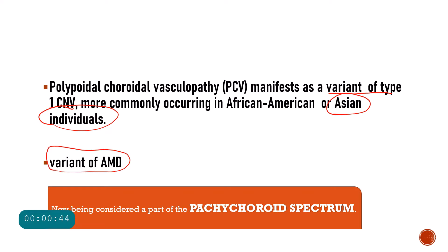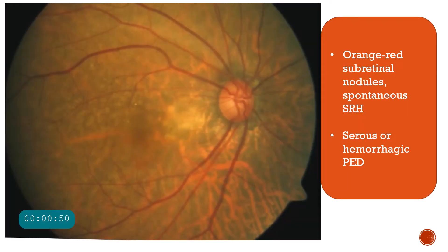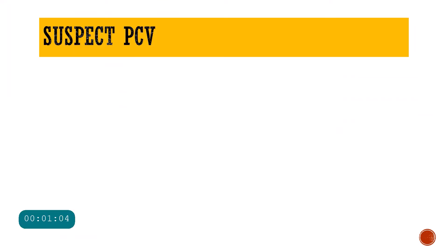However, with newer classification and new research, PCV is now being considered a part of the pachychoroid spectrum. The PCV lesions might actually look like orange-red subretinal nodules and they present with spontaneous subretinal hemorrhage. Sometimes a serous or a hemorrhagic pigment epithelial detachment will also be present.